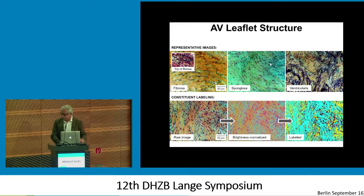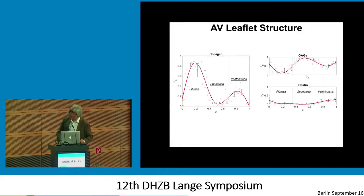These layers are really quite complex. In the fibrosa layer there is mostly type 1 collagen. The spongiosa is a glycosaminoglycan-rich layer, and the ventricularis is a very interesting elastin-collagen composite. We did some very detailed analysis of these. The collagen is mostly concentrated in the fibrosa, very little in the spongiosa, and some in the ventricularis. GAGs are mostly in the spongiosa but present throughout the valve. Elastin is present a little in the fibrosa — which is usually not appreciated — but mostly in the ventricularis.